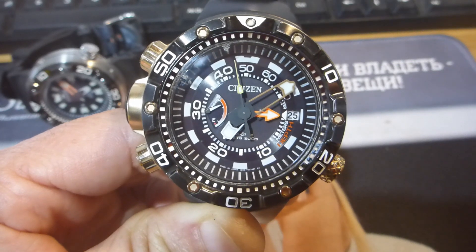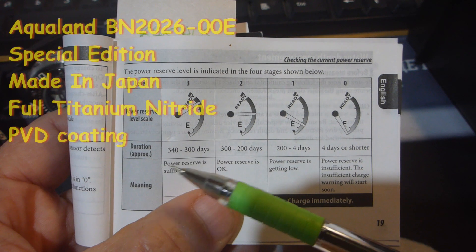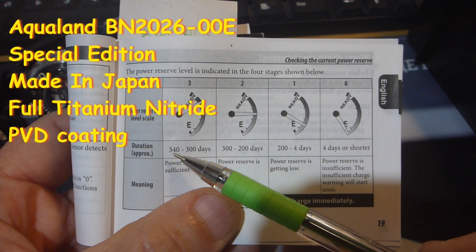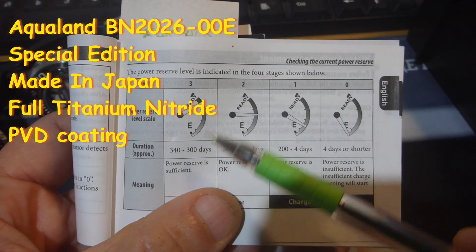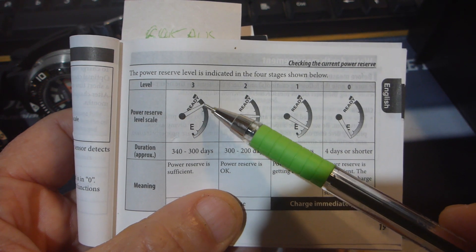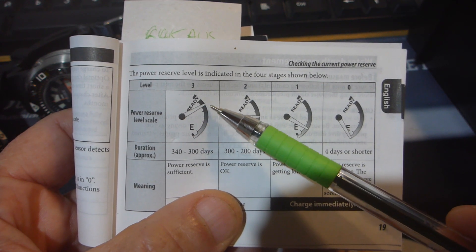So as you can see in the manual here for this particular Aqualand, it says 340 to 300 days left if the needle is above this top mark here, somewhere around halfway here.